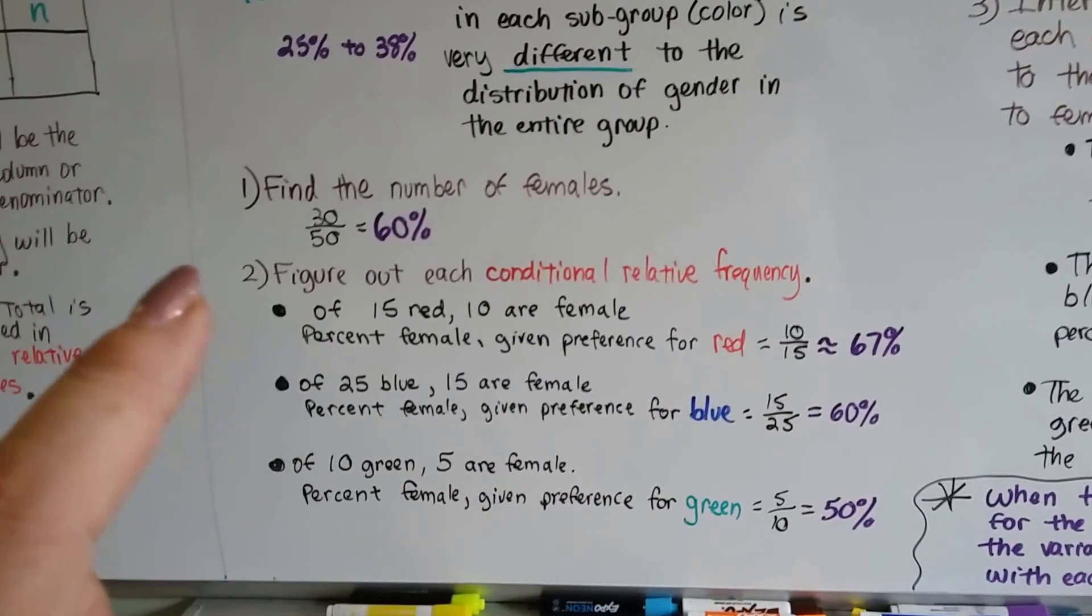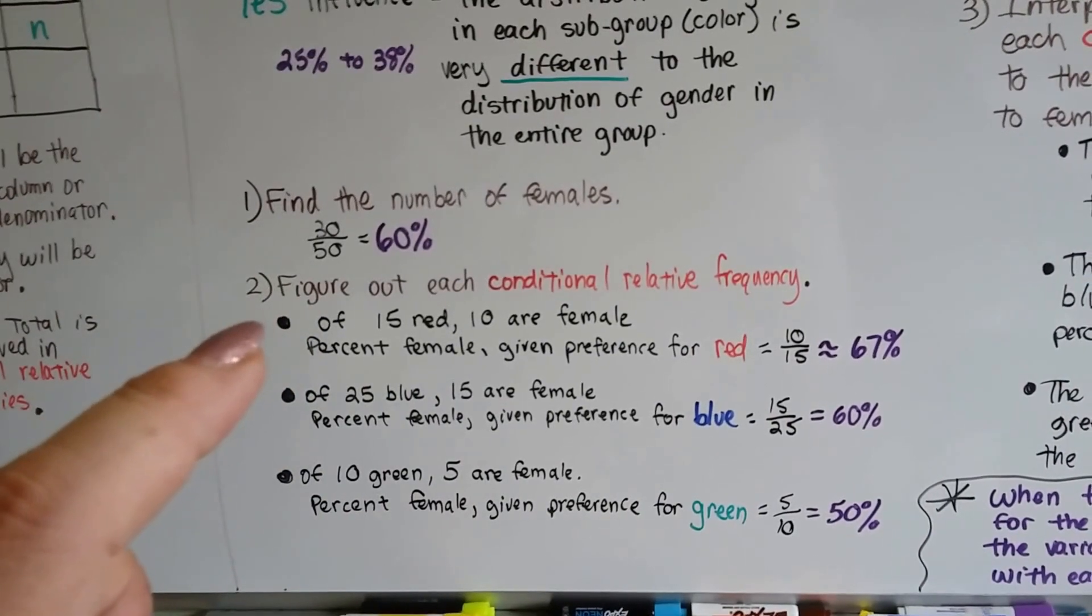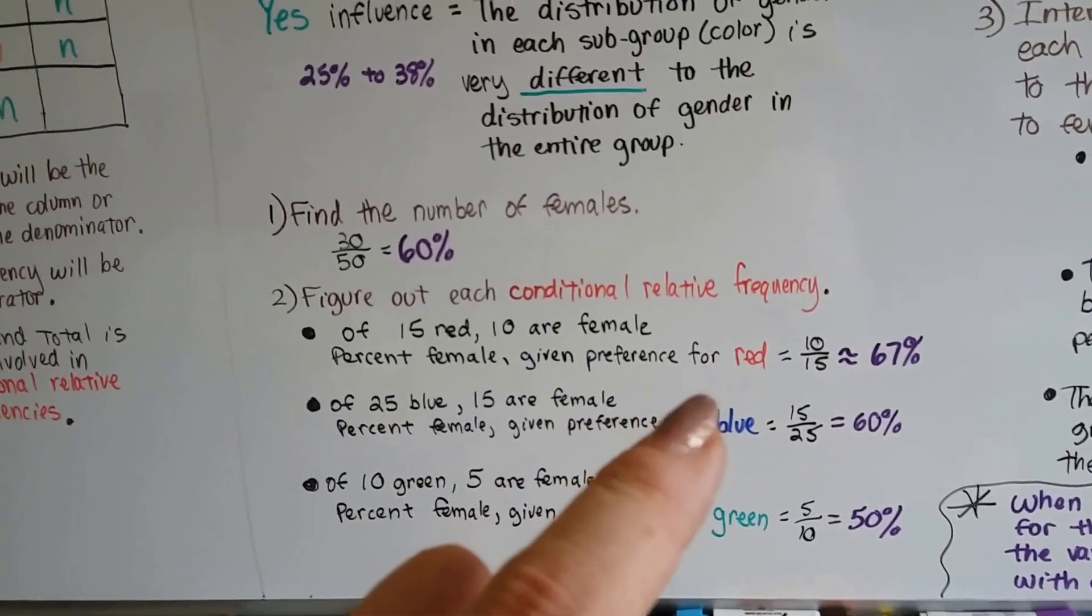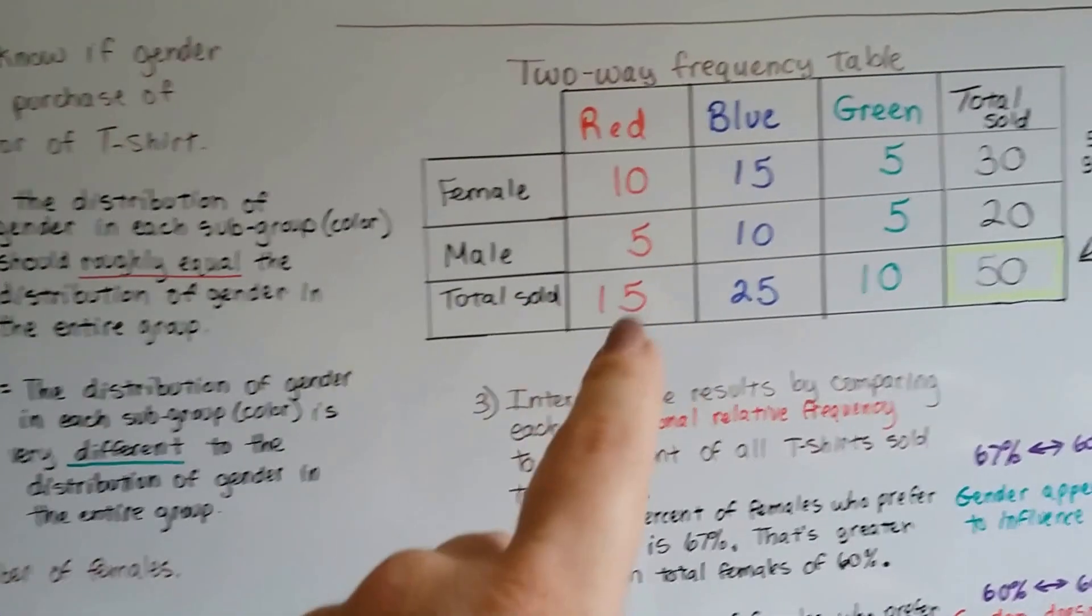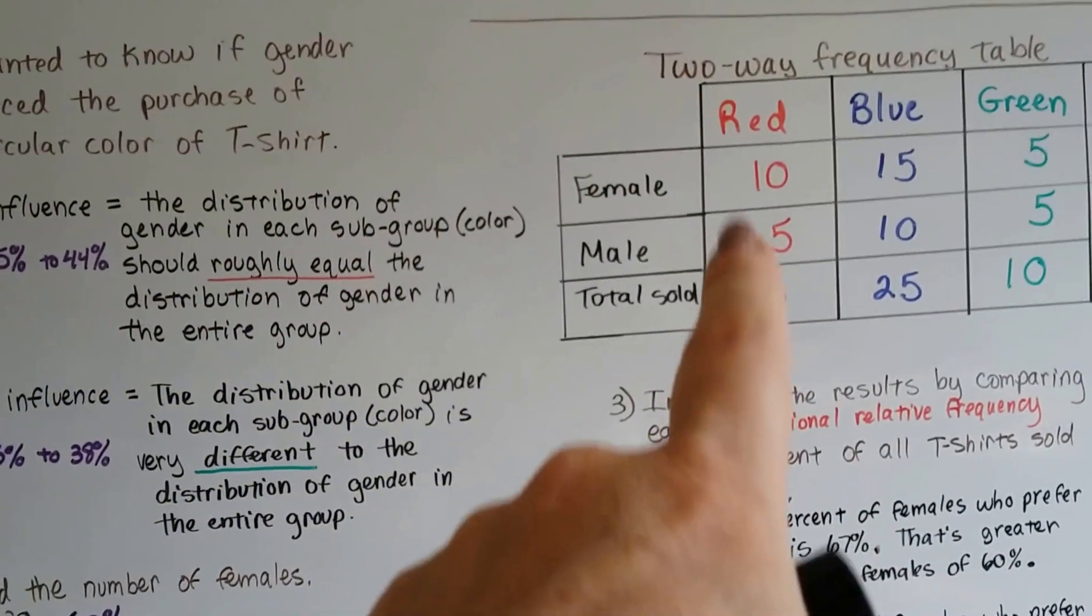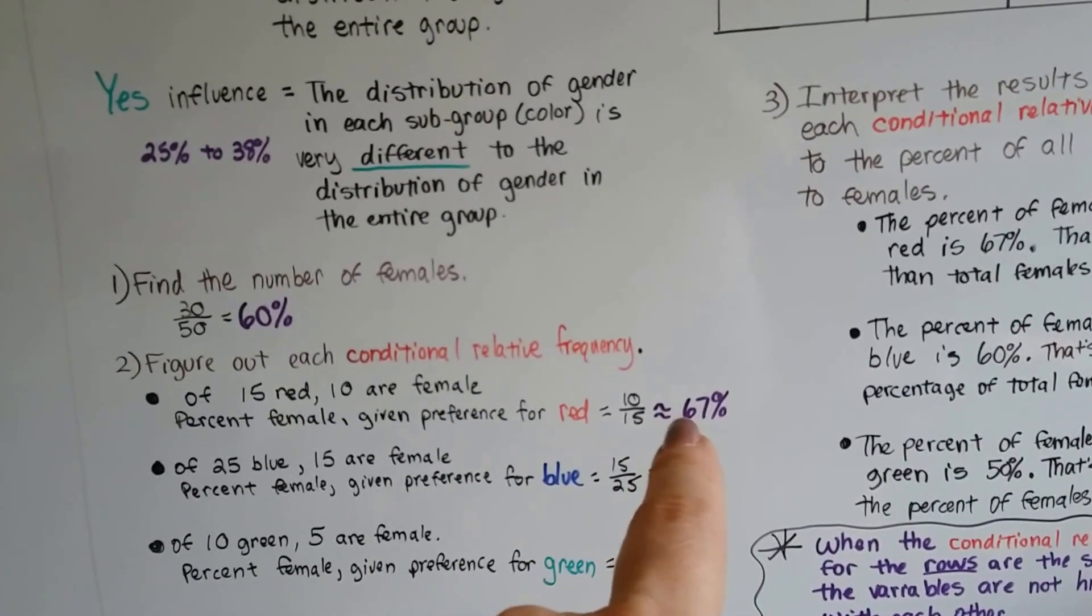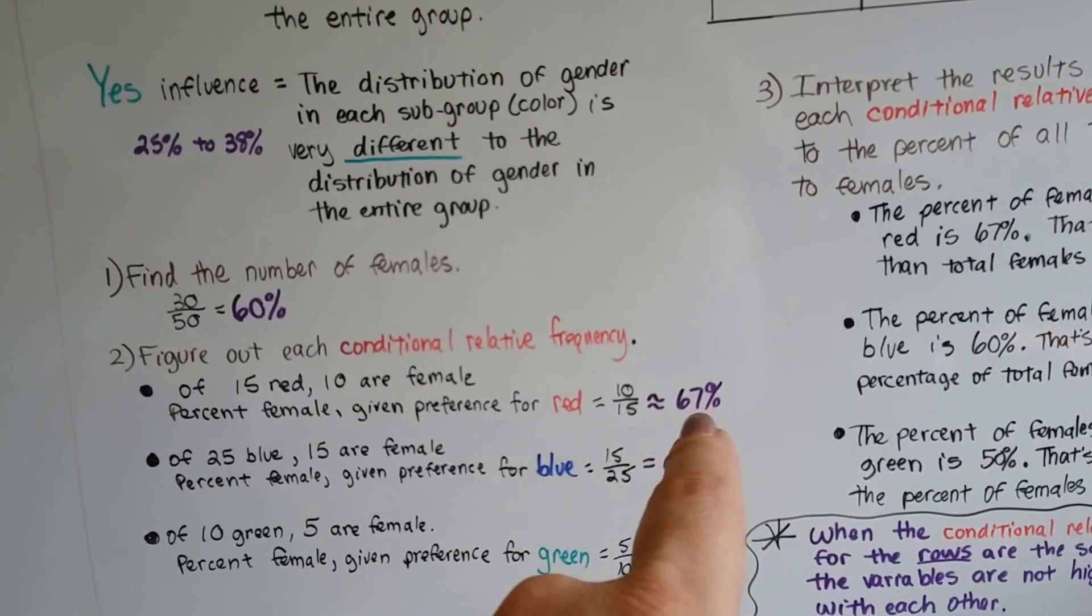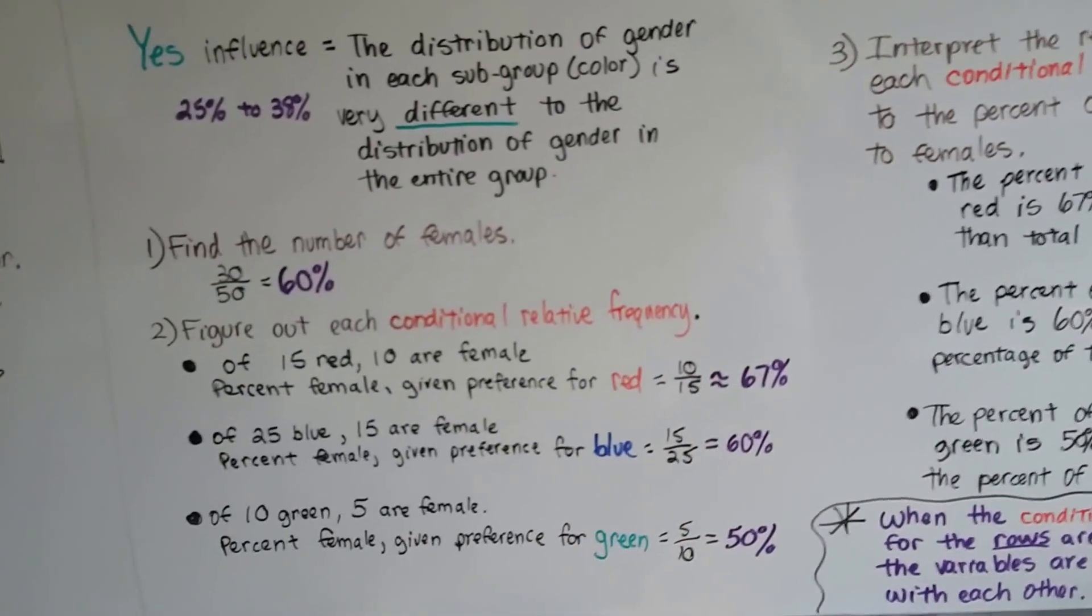Now what we're going to do is figure out the conditional relative frequency of red, blue, and green. So to do the conditional relative frequency, percent female given the preference for red. Because the given tells us the denominator, we know that the red total is going to be the denominator. The red total is 15, so we've got a 15 for our denominator. And the females are 10 red, so we've got 10 over 15. We do our division, 10 out of 15, 10 divided by 15. And it was 0.66666 and it had a 7 at the end. So I just rounded it and put an approximate symbol of 67%.